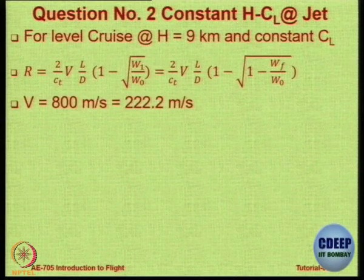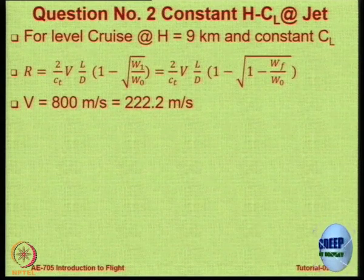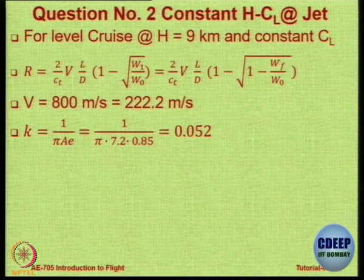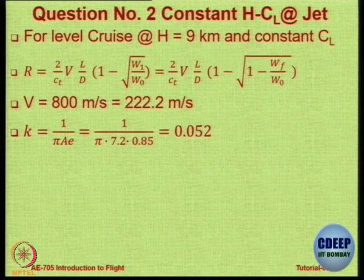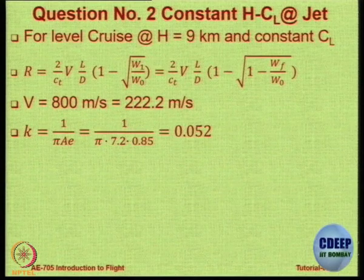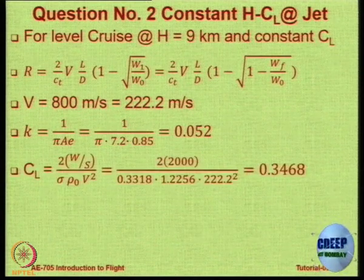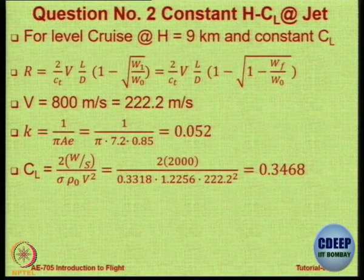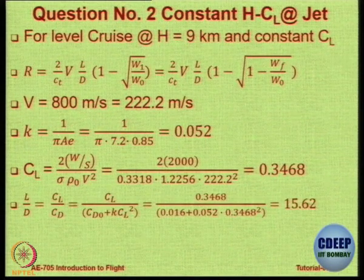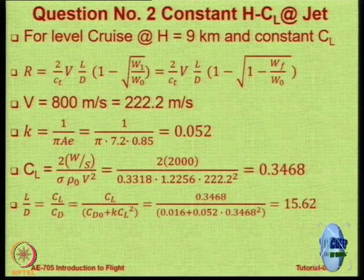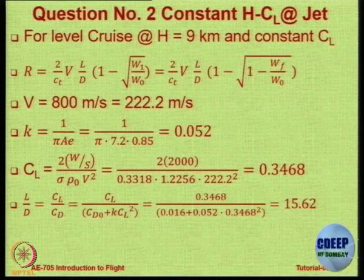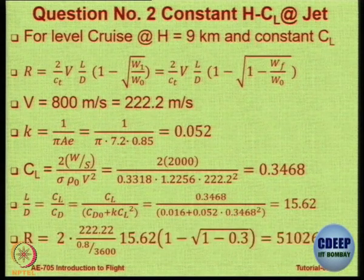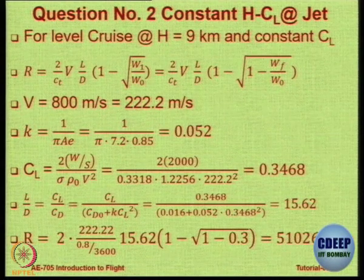V is given as 800 km/h — convert to m/s by dividing by 3.6. K, the induced drag coefficient, is 1/(π × A × e); A and e are given so you compute K. C_L equals 2(W/S) / (σρ₀V²), where σρ₀ is the density. L/D equals C_L / C_D, where C_D = C_D0 + K·C_L². With C_D0 = 0.016 and K now calculated, L/D comes out to 15.62. Note this is not L/D max — it is 0.866 times L/D max.